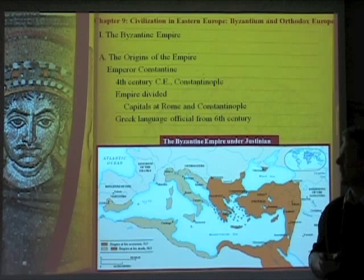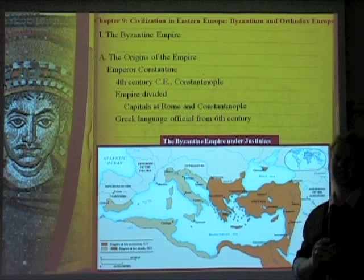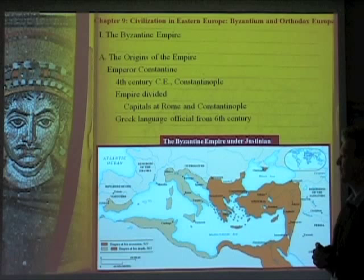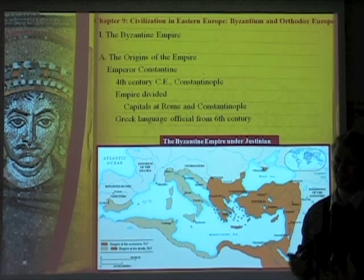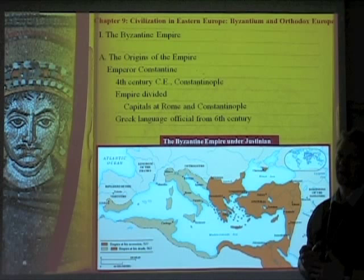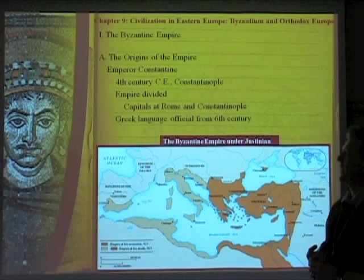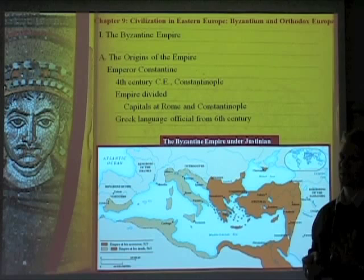The Byzantine Empire origins: Under Diocletian, you get a split between the West and the East — the Roman Empire split into two capitals, Rome and Constantinople. Emperor Constantine becomes emperor in the 4th century CE and founds Constantinople, rebuilding the city with churches and palaces. Greek becomes the official language from the 6th century on in the East, and you already start to see a split between Latin and Greek.